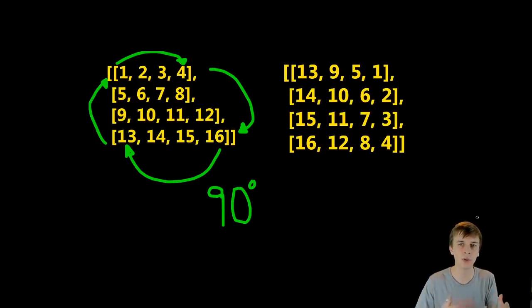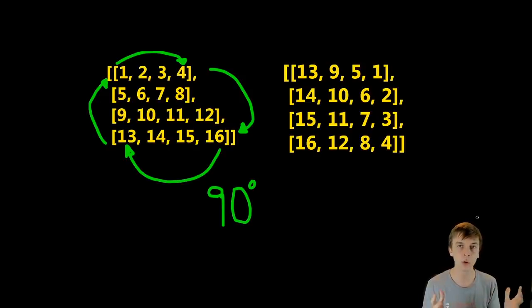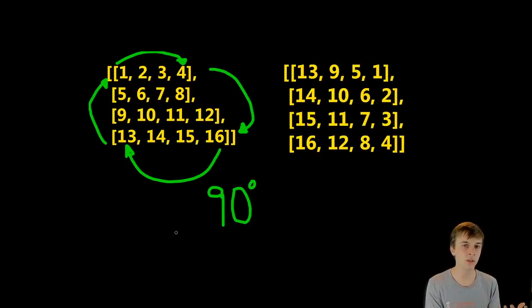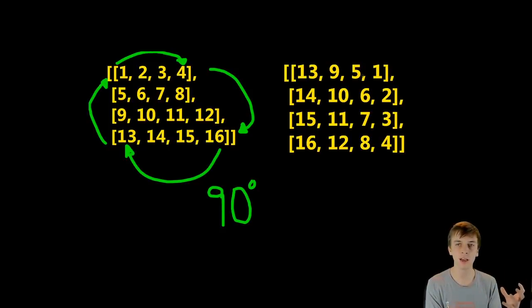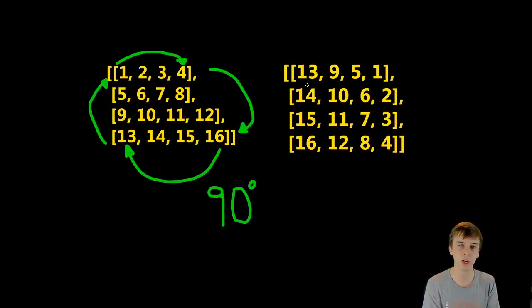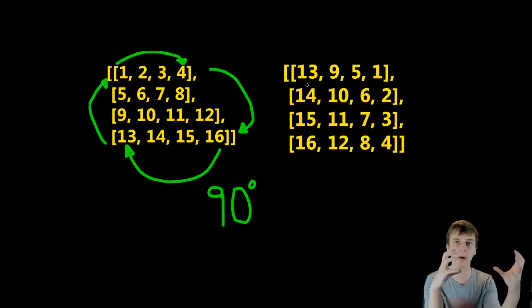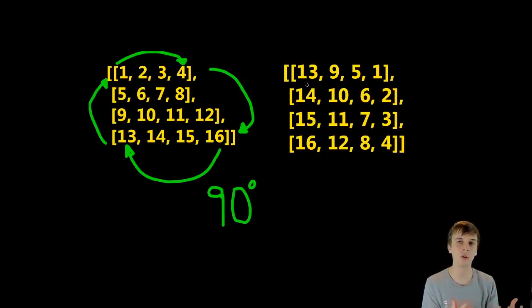Let's go through one more example. This time we're going to be dealing with a four by four 2D array — a bigger array — just to show the step-by-step process. This is our input on the left, and you can see how if we rotated this 90 degrees clockwise it would look like the output on the right. First row becomes last column, second row becomes second-to-last column, third row becomes third-to-last column, and the last row becomes the first column. Let's do our two-step process and see if this comes out correctly.